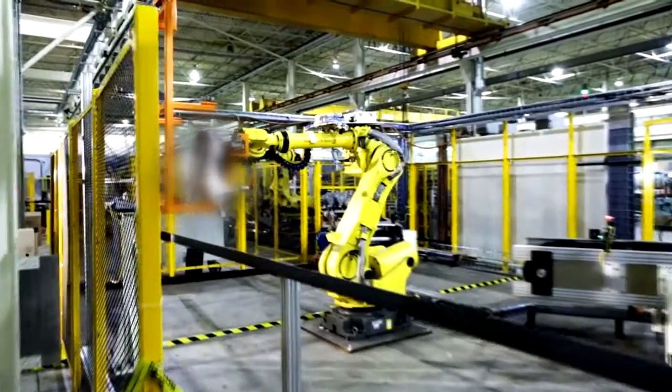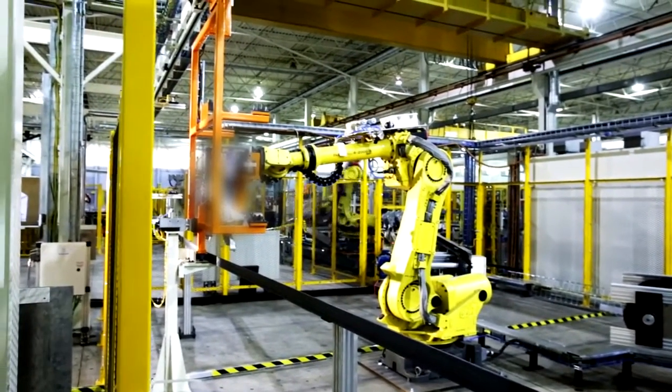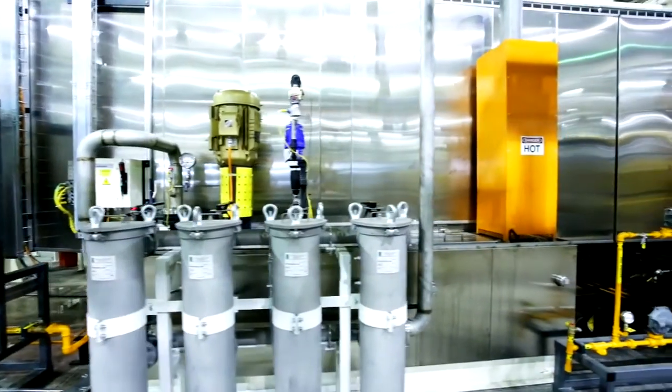The castings are then robotically loaded to an overhead power and free conveyance system that takes them through a pre-wash, rinse, dry, and then coats them with a penetrant.